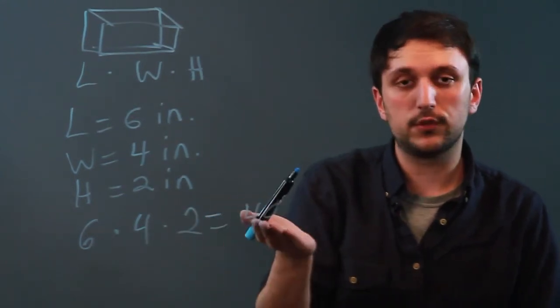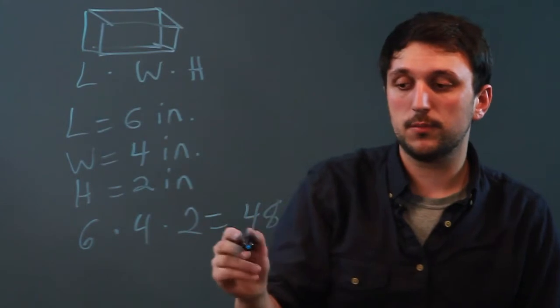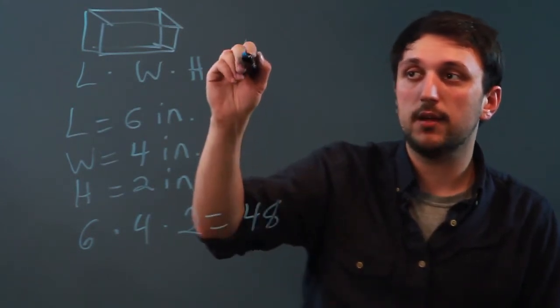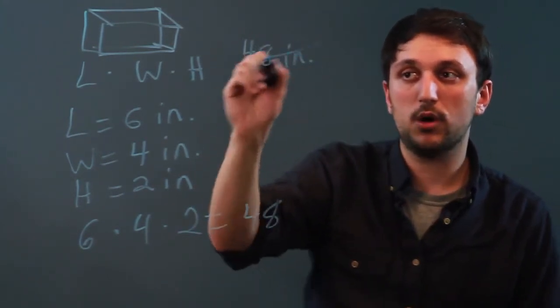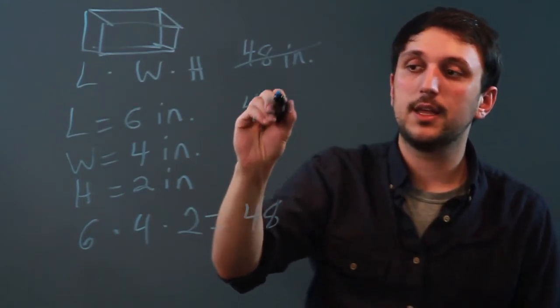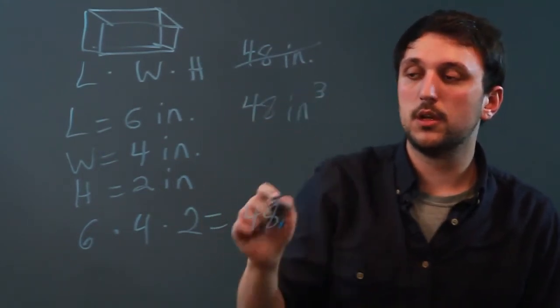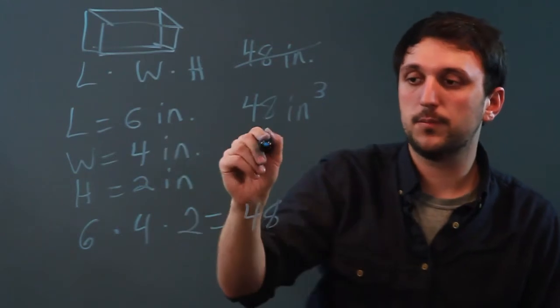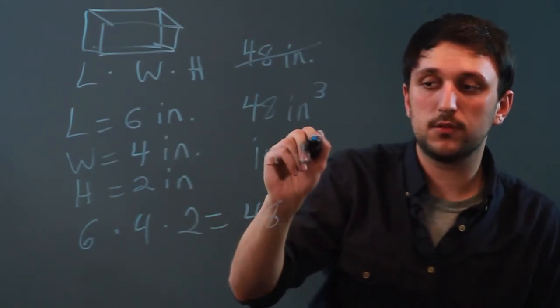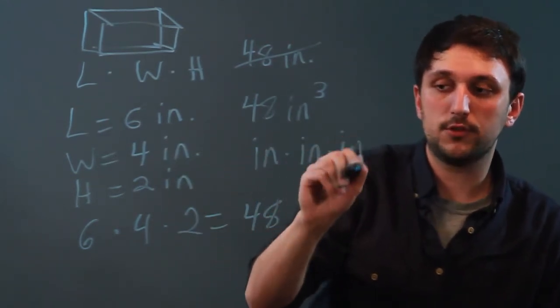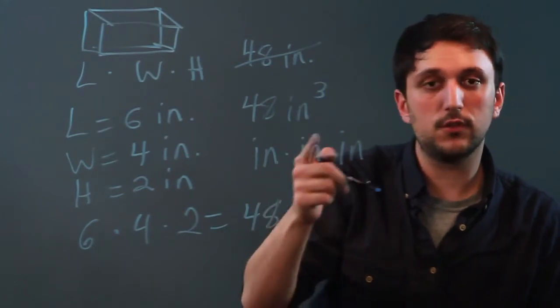But 48 is just a number, so we have to take those inches. The thing is, we don't say 48 inches. That's wrong. We say 48 inches cubed, because we've had to say inches times inches times inches, which is inches to the third power.